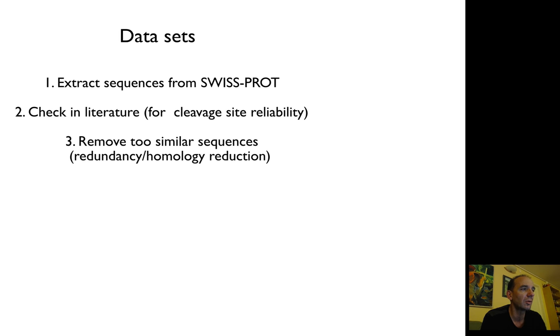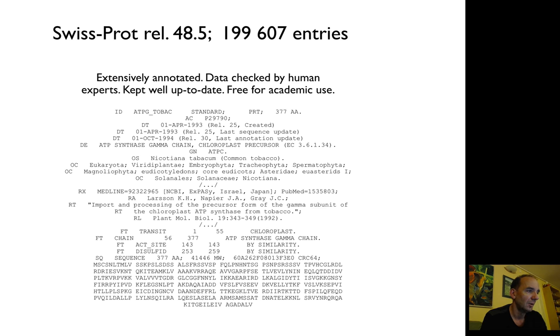They use Swiss-Prot version 48.5 which had 200,000 entries. Today we have half a million entries. You can find entries where the description says chloroplast precursor. You can see features like the transit peptide from position 1 to 55, which is chloroplast. You can extract all these entries and check the papers, like the paper by Larsson published in '92, about the precursors from the gamma subunit of chloroplast ATPase. You can extract that automatically with computer programs, but you can check it better manually if you read the paper.